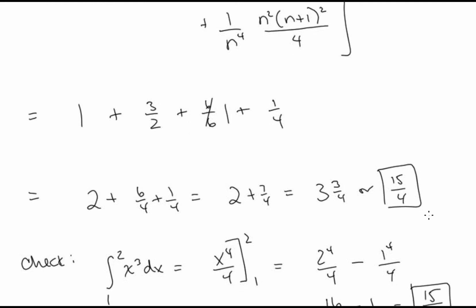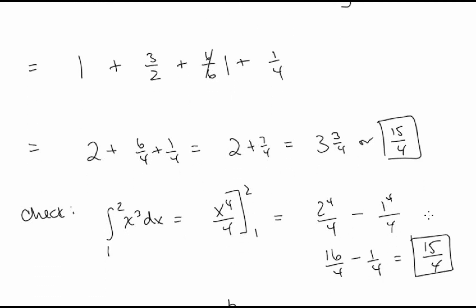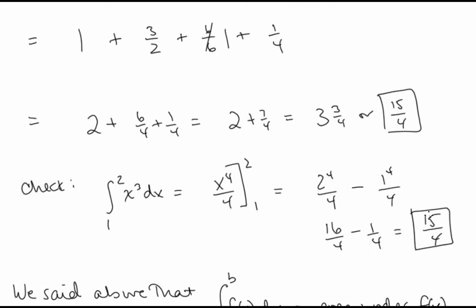Checking our work with the antiderivative: we have x to the fourth over 4. Plugging in x equals 2 and x equals 1 and subtracting gives the same answer of 15 fourths.